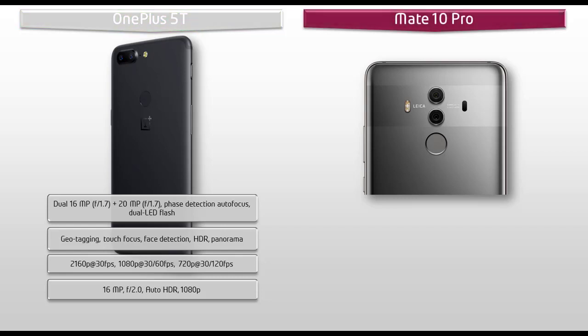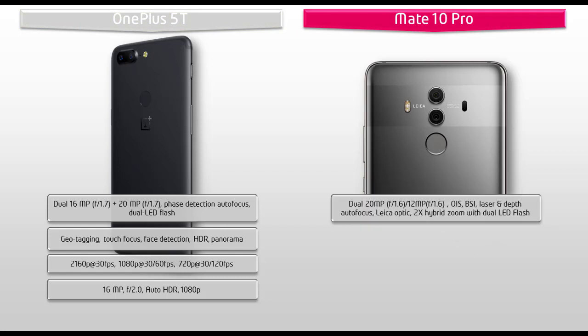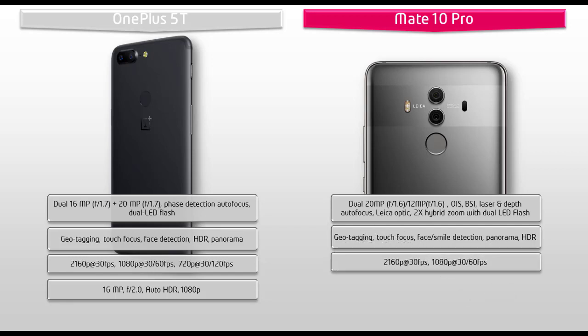Moving on to the primary camera of the Huawei Mate 10 Pro, it is equipped with dual 20 megapixels and 12 megapixels primary camera with f/1.6 aperture, optical image stabilization, BSI, laser and depth autofocus, 2x hybrid zoom with dual LED flash, and Leica optics technology. You can also find geotagging, touch focus, face and smile detection, panorama, and HDR. It shoots video at 2160p at 30 fps and 1080p at 30 or 60 fps. The Mate 10 Pro also comes with a secondary camera of 8 megapixels with f/2.0 aperture for selfies.